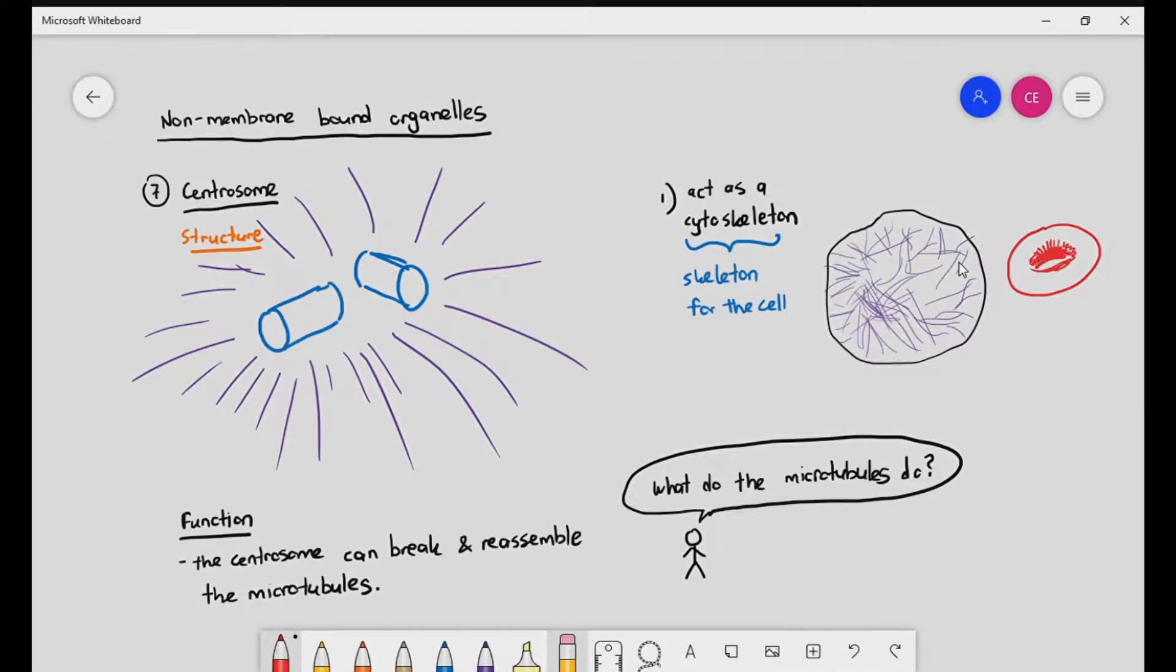How do you think that biconcave shape is being maintained within the cell? Well, it's because red blood cells have special types of cytoskeleton to maintain the shape of that cell within the cytoplasm. So you see, that's one of the main functions of the cytoskeleton.